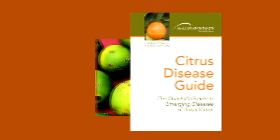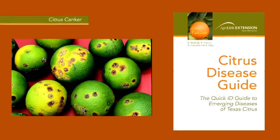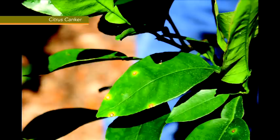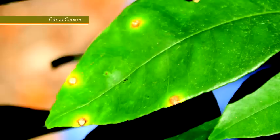Citrus canker is caused by a bacteria. This bacterial disease causes premature leaf and fruit drop, blemished fruit, twig dieback, and general decline of the tree.